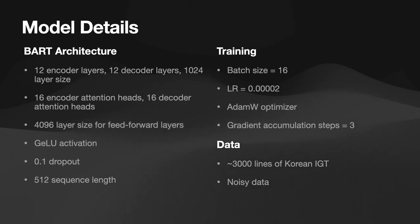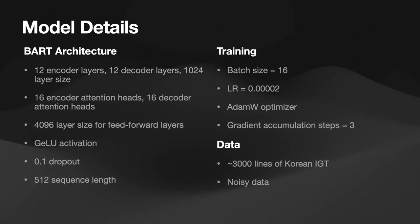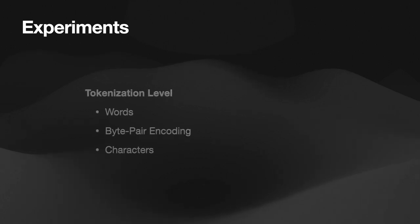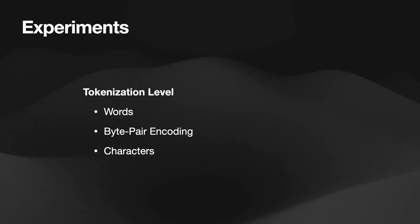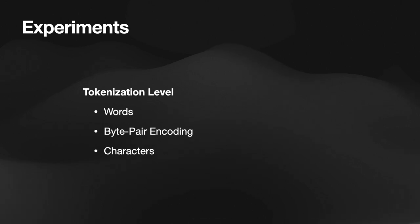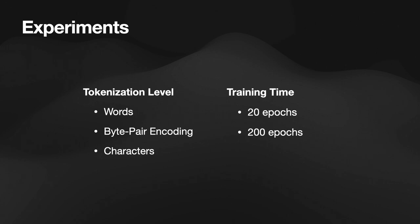Our models use the BART architecture, which excels at text summarization and generation, using the following parameters. We trained it on 3,000 lines of Korean IGT data from the ODIN corpus. We conducted several experiments. First, we trained three models at different tokenization levels for the inputs: one model divided the sentences into individual words, another into individual characters, and a third used byte-pair encoding to create sub-word tokens. Additionally, we trained each model for both 20 epochs and 200 epochs.